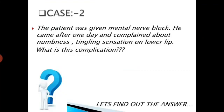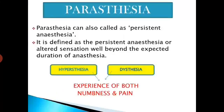Case No. 2. The patient was given a mental nerve block and came after one day complaining about numbness and a stinging sensation on the lower lip. What is this complication? The answer is paresthesia. Paresthesia can also be called persistent anesthesia, defined as persistent anesthesia or altered sensation well beyond the expected duration of anesthesia.